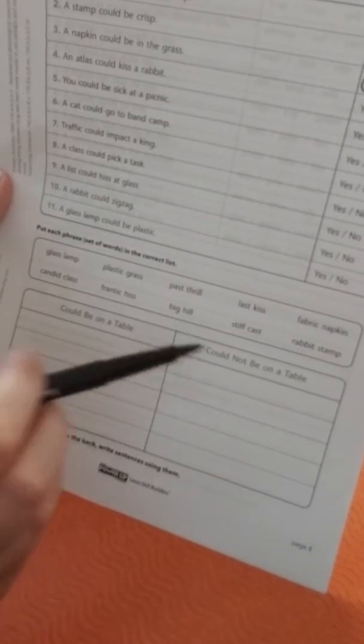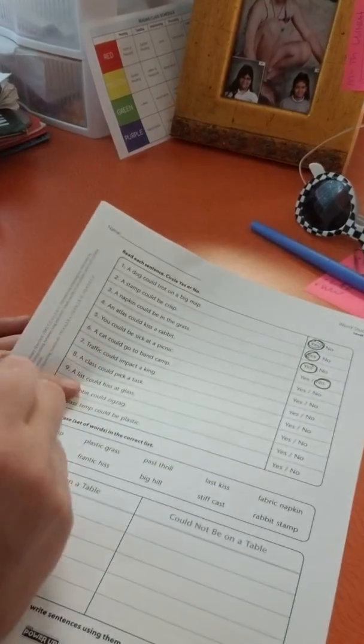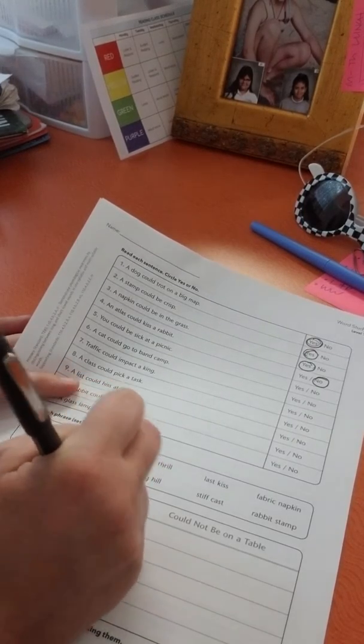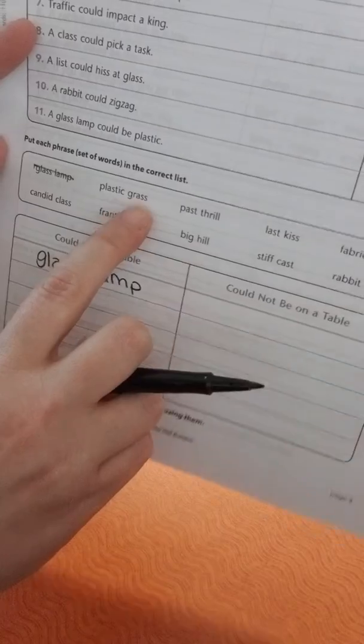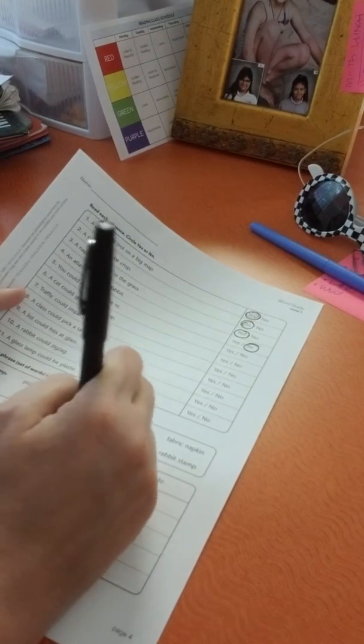So a glass lamp could be on a table, so I'm going to write that right here and I'm going to cross it off. Okay, so then let's see, plastic grass probably could not be on a table, so I'm going to put that over here.